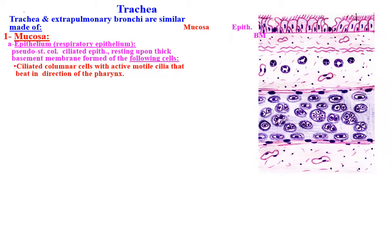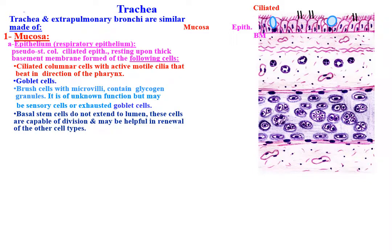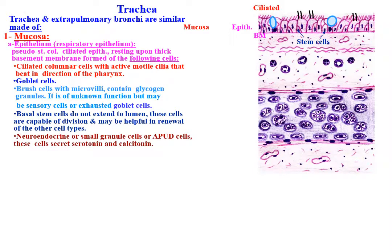Ciliated columnar cells with active motile cilia that beat in the direction of the pharynx. Goblet cells. Brush cells with microvilli that contain glycogen granules — of unknown function, but may be sensory cells or exhausted goblet cells. Basal stem cells which do not extend to the lumen and are capable of division, helpful in renewal of other cell types. Neuroendocrine or small granule cells (APUD cells) that secrete serotonin and calcitonin. Also migrating lymphocytes and mast cells.